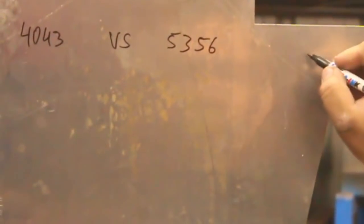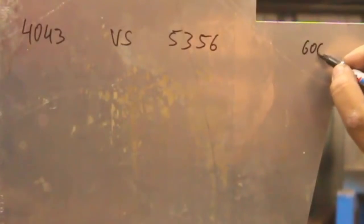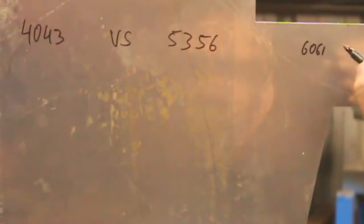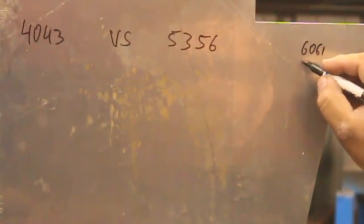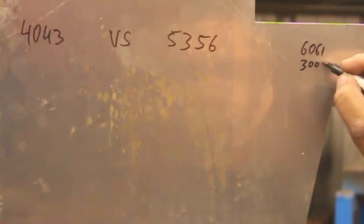So if you either weld 6061 aluminum or all of 6000 series, you can use either or. If you weld 3003, that's usually the diamond plate, you can use either or.